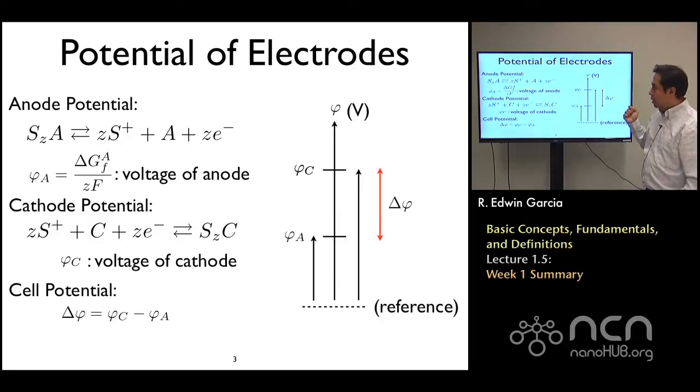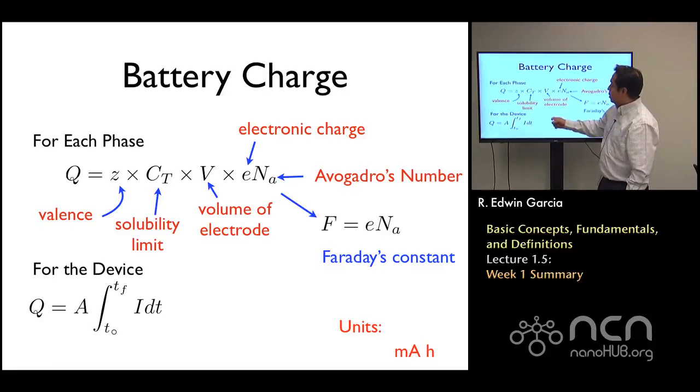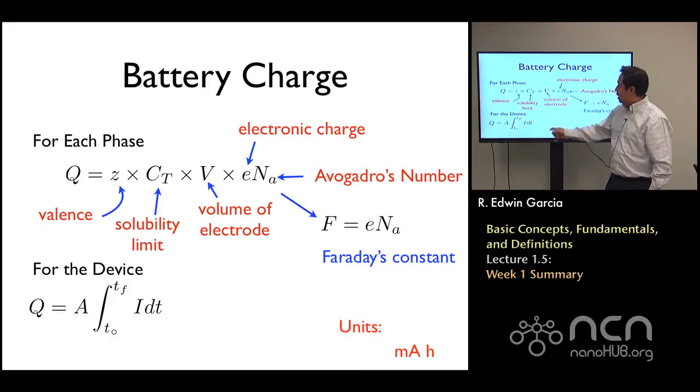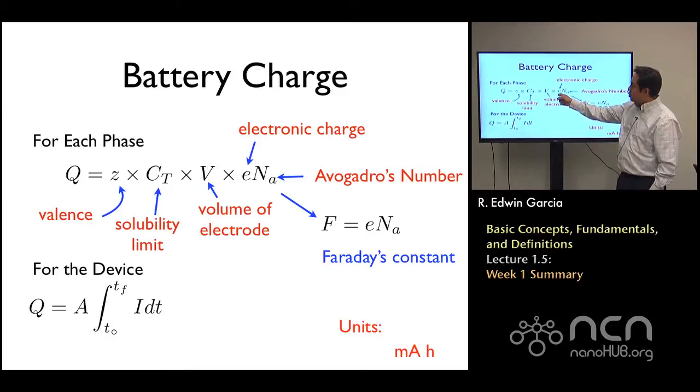But this quantity by itself will not be the only one that is critical to specifying its performance. We also have the charge of the battery, which is determined by how much of the active material of the species S can be stored, which is determined by the solubility limit of that species in the electrode material.